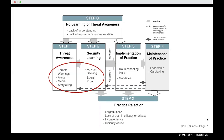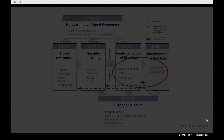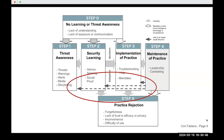We found many similar security states and associated social influences. We also found that troubleshooting was significantly associated with adoption in our interview sample, as were leadership and caretaking behaviors for those who had achieved Step 4, maintenance of practice. And that leads them to be influencers for others who are coming through the process.